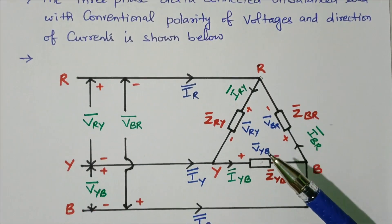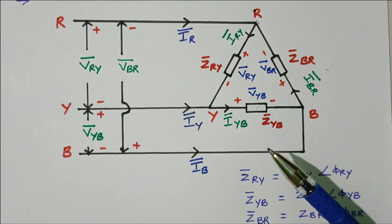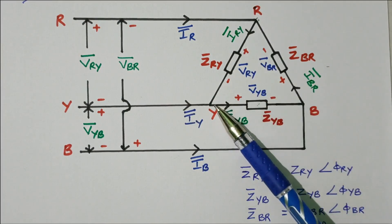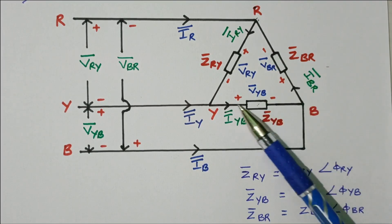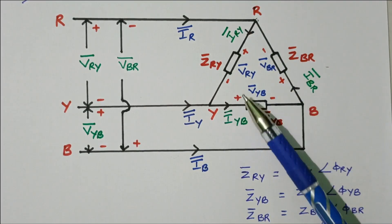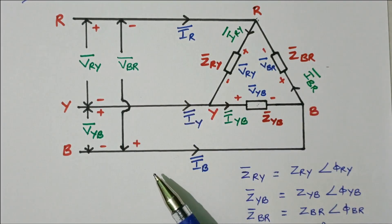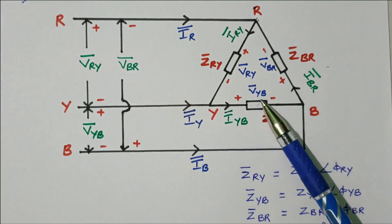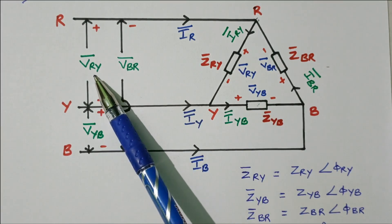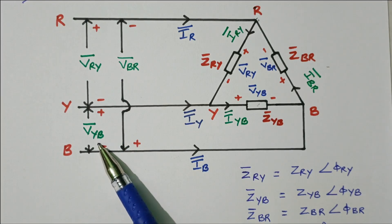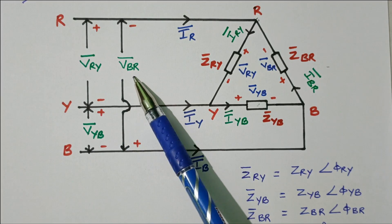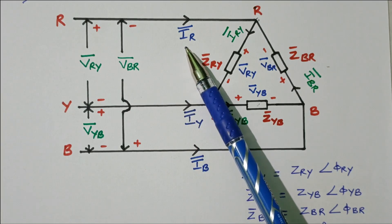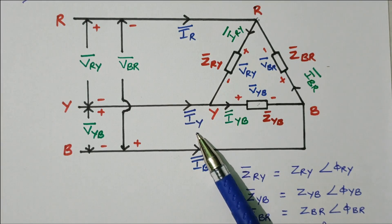Now we will refer the diagram. This is the R-Y-B: three phases available. This is delta connected — one end of the load is connected to another end of another load, connected end to end. All three loads are connected end to end. From that, three wires are taken out. This side is referred to as line voltage or line current; this is the phase voltage or phase current. V-R-Y is the line voltage between R-phase and Y-phase. V-Y-B is the line voltage between Y-phase and B-phase.